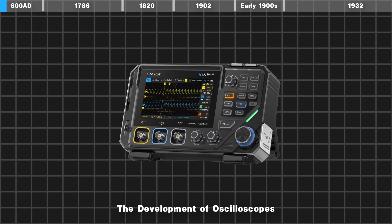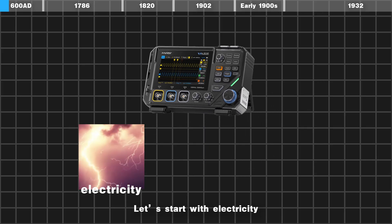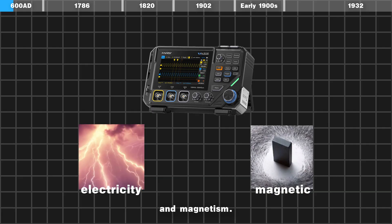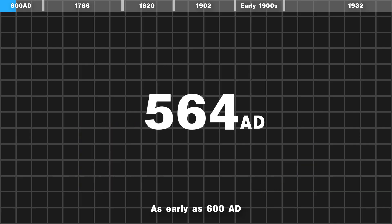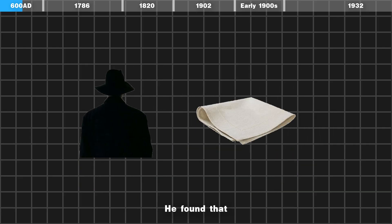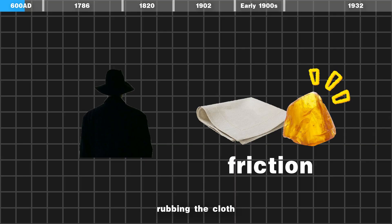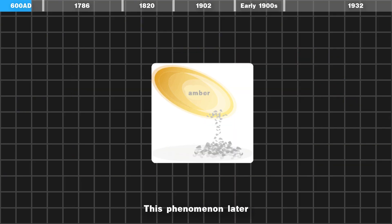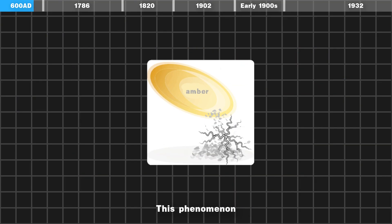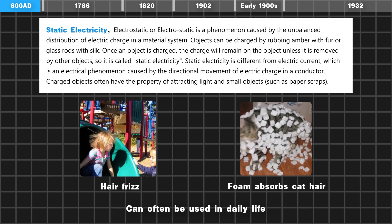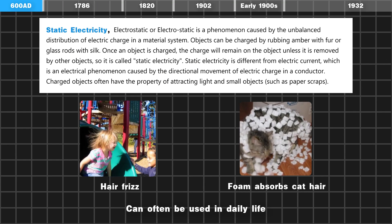The development of oscilloscopes. Let's start with electricity and magnetism. As early as 600 BC, an ancient Greek scholar found that rubbing cloth against amber can absorb small items. This phenomenon is called electrostatics, and can often be seen in daily life.